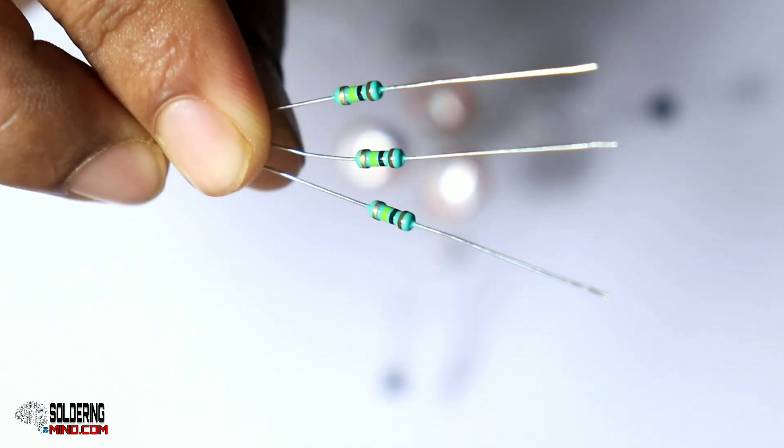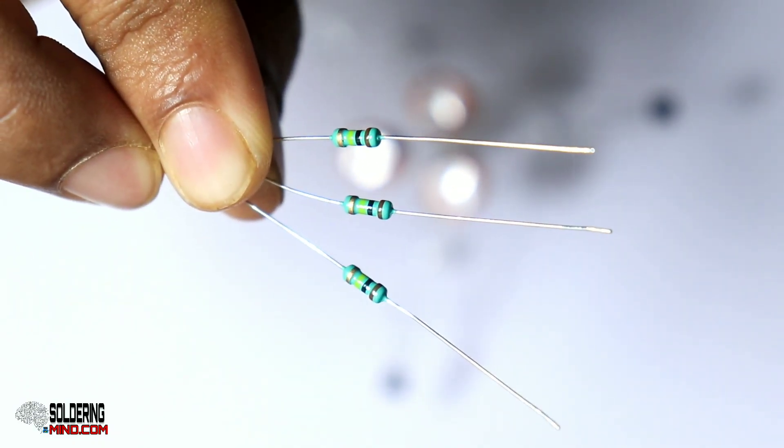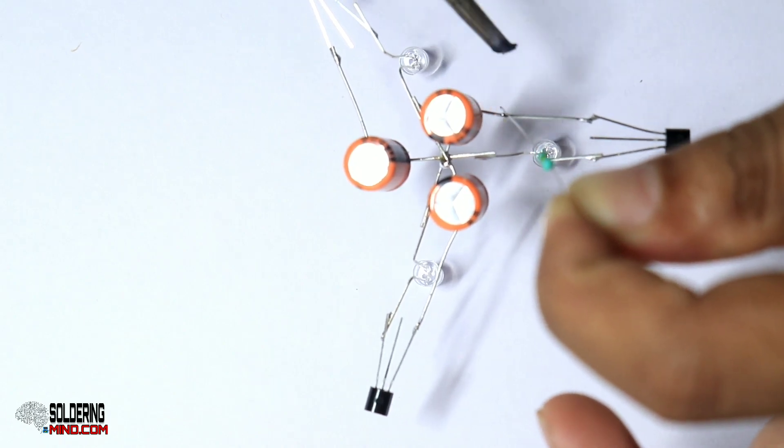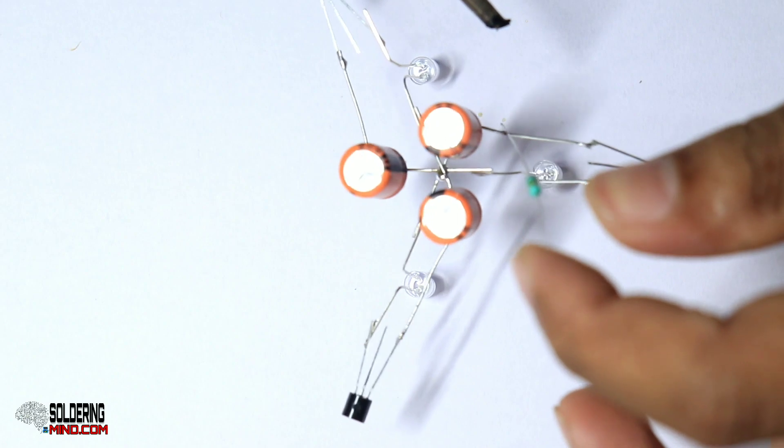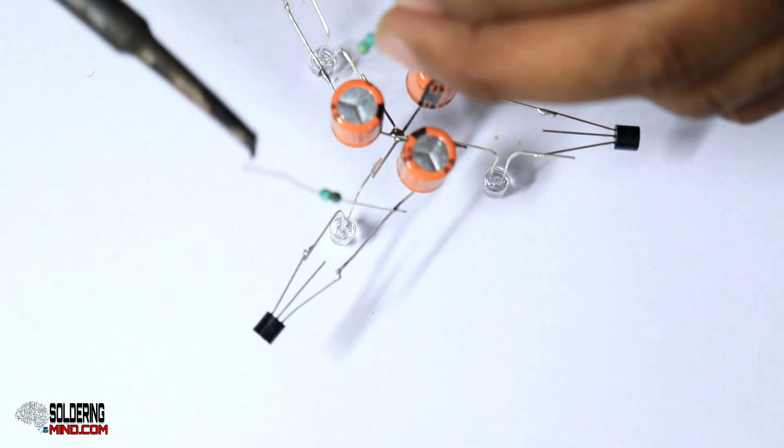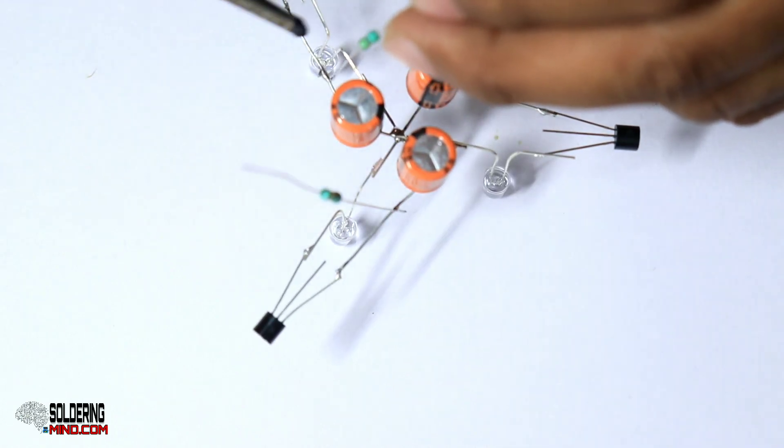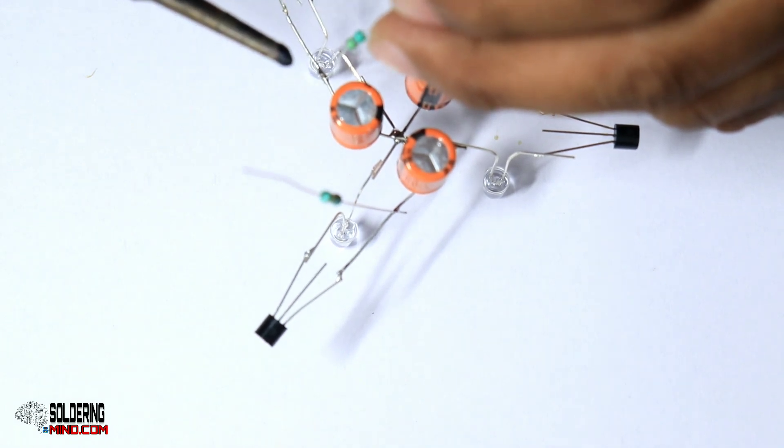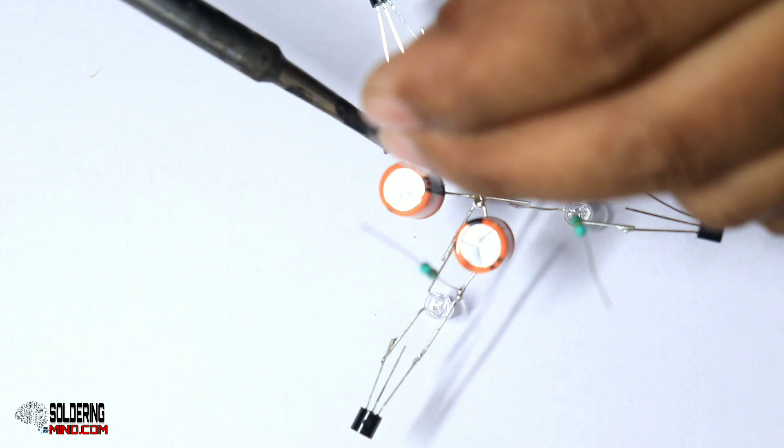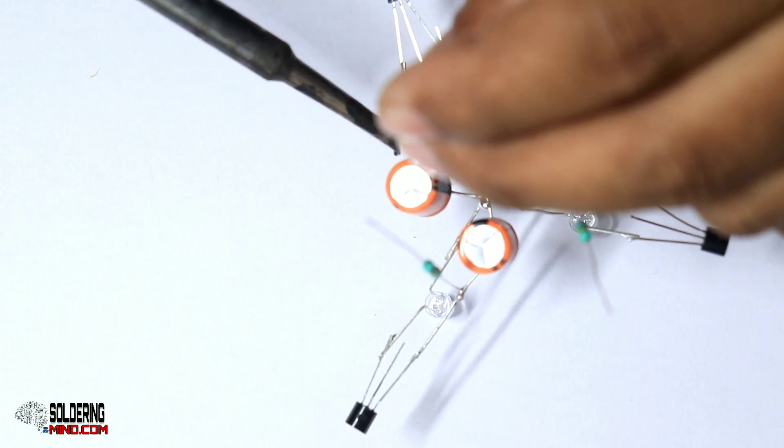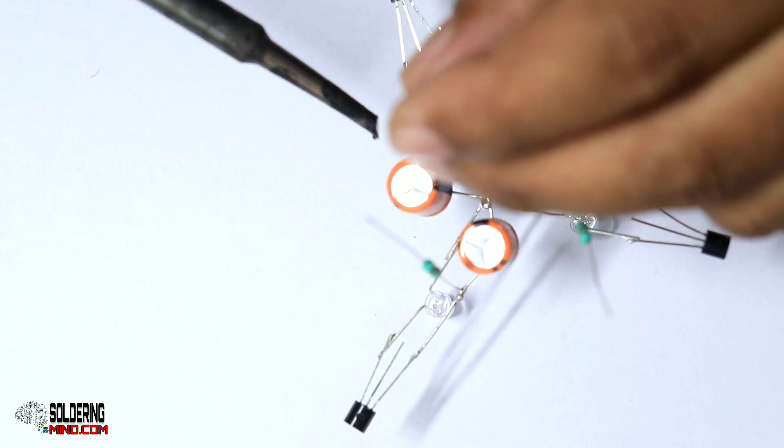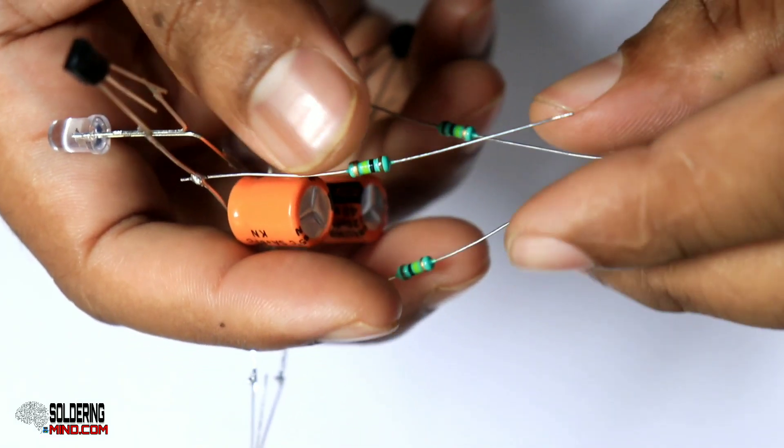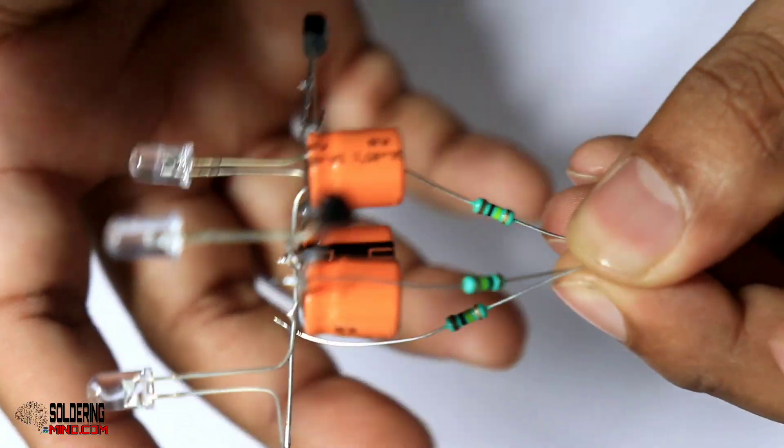Take three resistors with the rating of 100 kilo-ohms. Connect the resistors where the capacitor positive polarity and the transistor collector are joining. You need to connect together the three resistors.